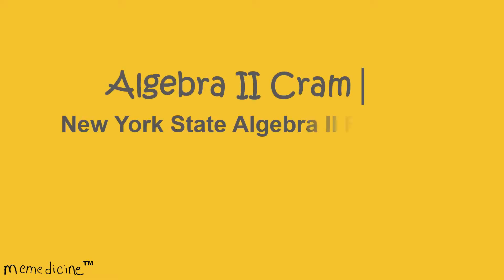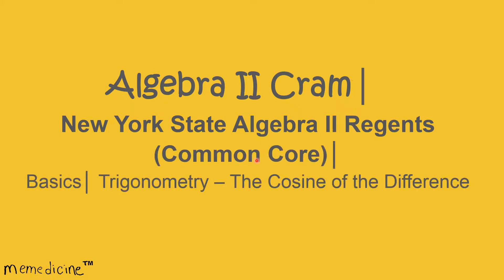Algebra 2 Cram. New York State Algebra 2 Regents, Common Core Basics. Trigonometry: The cosine of the difference of two angles, Number 4.